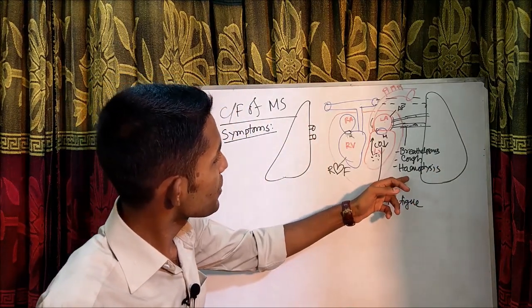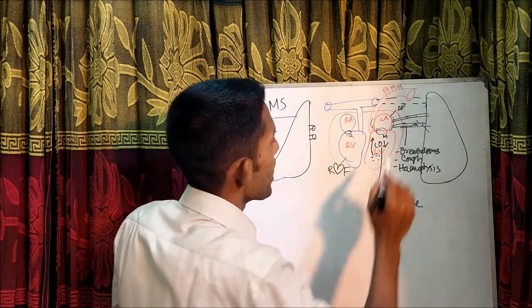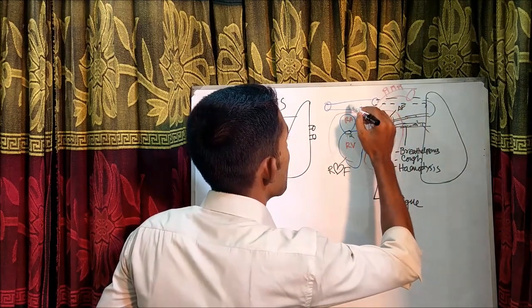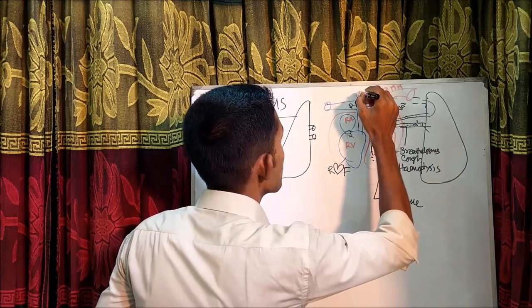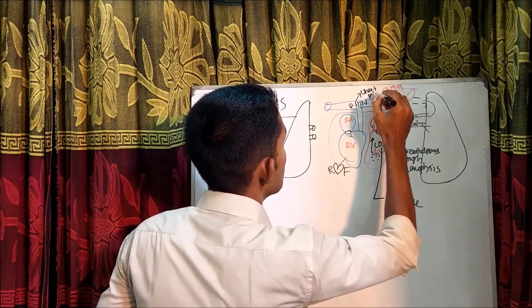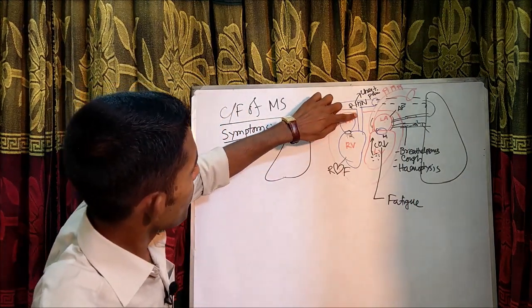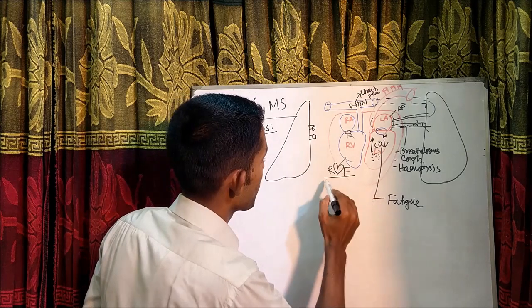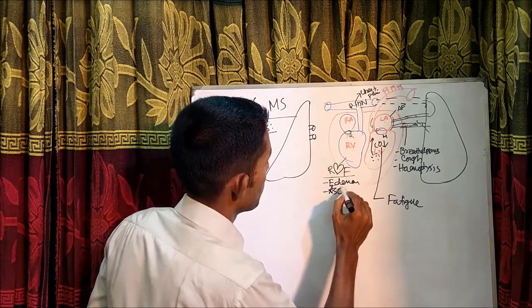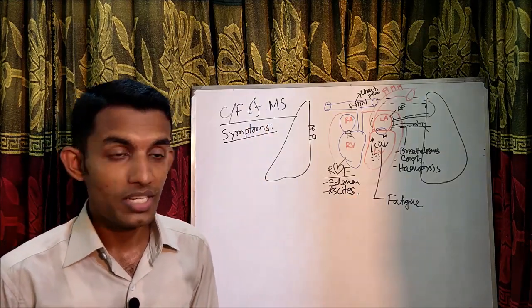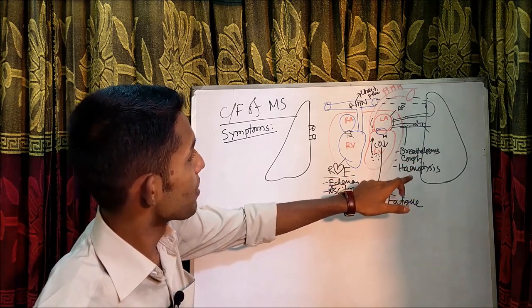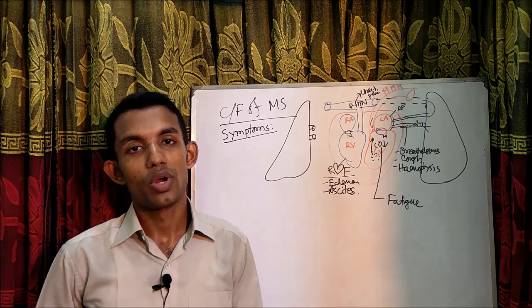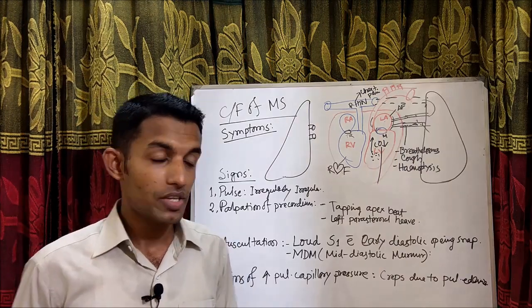Hemoptysis occurs because pulmonary venous congestion can cause a bronchial vein to rupture. Pulmonary venous congestion also leads to pulmonary hypertension, which may cause chest pain. Pulmonary hypertension causes right ventricular dilatation, producing features of right heart failure such as edema. In summary, symptoms of mitral stenosis are: fatigue, breathlessness, cough, hemoptysis, palpitation, chest pain, and edema.